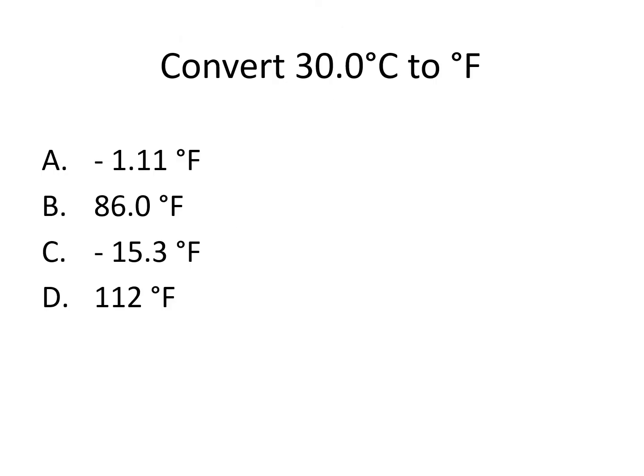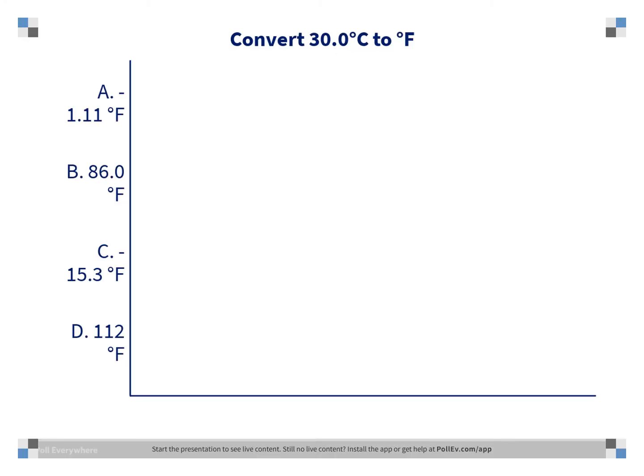Convert 30.0 degrees Celsius to degrees Fahrenheit. Is it A, negative 1.11 degrees Fahrenheit; B, 86.0 degrees Fahrenheit; C, negative 15.3 degrees Fahrenheit; or D, 112 degrees Fahrenheit? The correct answer is B, 86.0 degrees Fahrenheit. We use our Celsius to Fahrenheit equation, which means we first multiply our 30.0 degrees by 1.8, and then add 32.